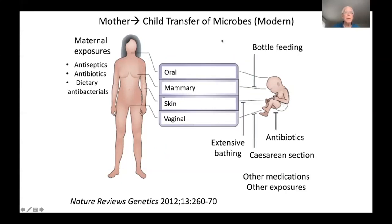But now life is different. Moms aren't the same as they were — they're living in a world with antisepsis, they've taken antibiotics, they're receiving antibacterials in their diet. And babies aren't the same either. They may be born by cesarean section and miss the passage through the birth canal. In the United States, one baby out of three is born by C-section; in some countries it's higher. Babies are bathed extensively, fed formula — which only superficially resembles human breast milk — and they get lots of medications, especially antibiotics.